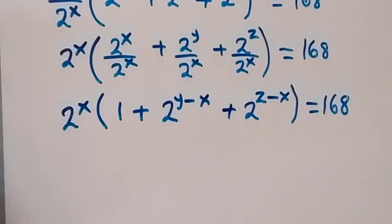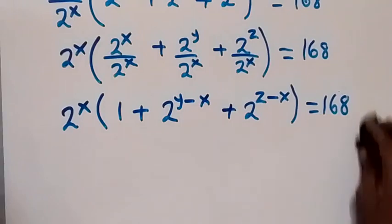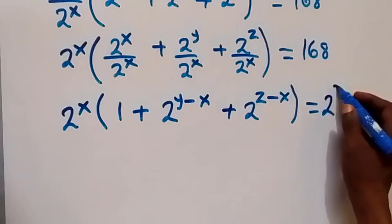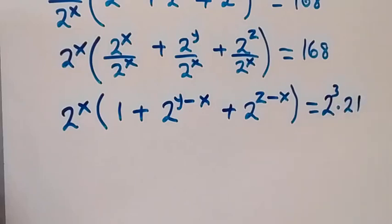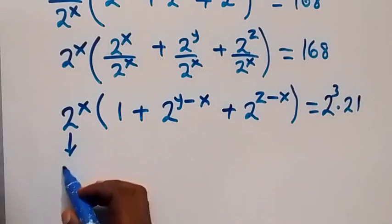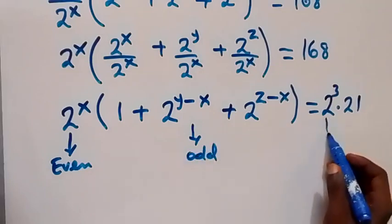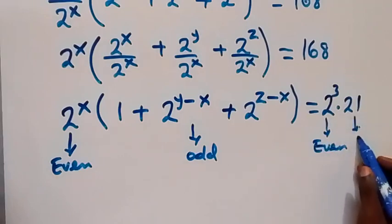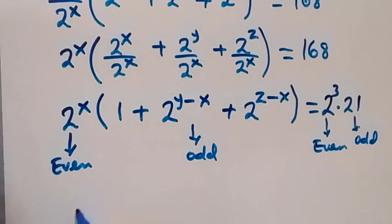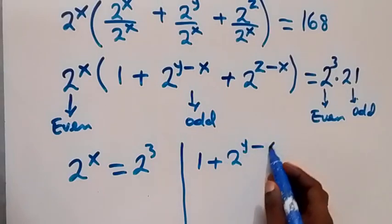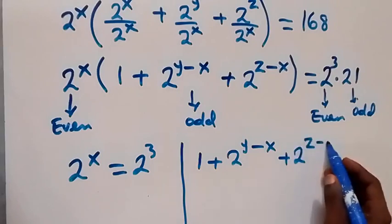We can separate 168 as a product of an even number and an odd number: 8 times 21 equals 168, which is 2 raised to power 3 times 21. The even part corresponds to 2 raised to power x and the odd part to the bracket expression. So we equate 2 raised to power x equals 2 raised to power 3, and also equate 1 plus 2 raised to power (y minus x) plus 2 raised to power (z minus x) equals 21.